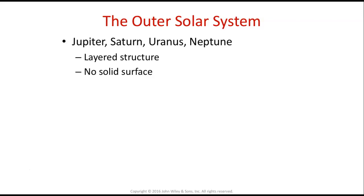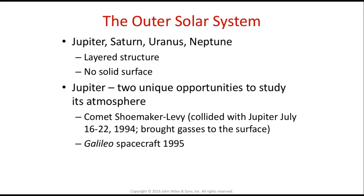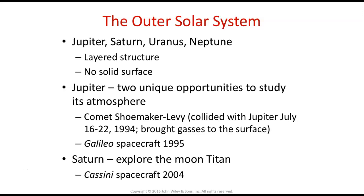Now let's talk about the outer solar system: Jupiter, Saturn, Uranus, Neptune. They have layered structures just like we do, but they have no solid surface. Jupiter gave us two unique opportunities to study its atmosphere. The first was the bombardment from comet-sized materials — Comet Shoemaker-Levy collided with Jupiter July 16 through 22, 1994, bringing gases normally miles below Jupiter's surface up to the atmosphere for NASA to study. Then the Galileo spacecraft, launched in 1989 and arriving in 1995, sent a probe into Jupiter to study its atmosphere. We eventually crashed it into Jupiter so it wouldn't collide with Europa, one of Jupiter's moons. For Saturn, we explored its moon Titan with the spacecraft Cassini in 2004.